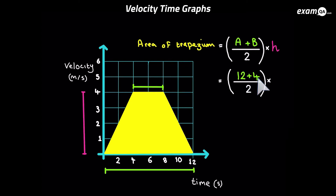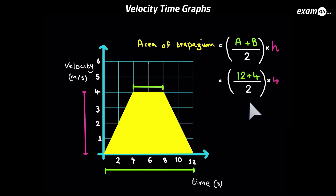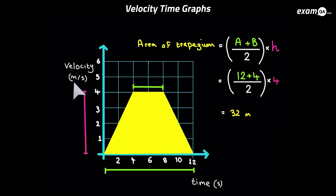We've got (12 + 4) over 2, and now we need to multiply by the distance between the parallel sides, which is 4. You can put that into your calculator and get the answer — the numbers are easy so you don't need a calculator. We get 32 meters. You can look at the velocity to work out the units: velocity is in meters per second, so distance will be in meters and time in seconds.